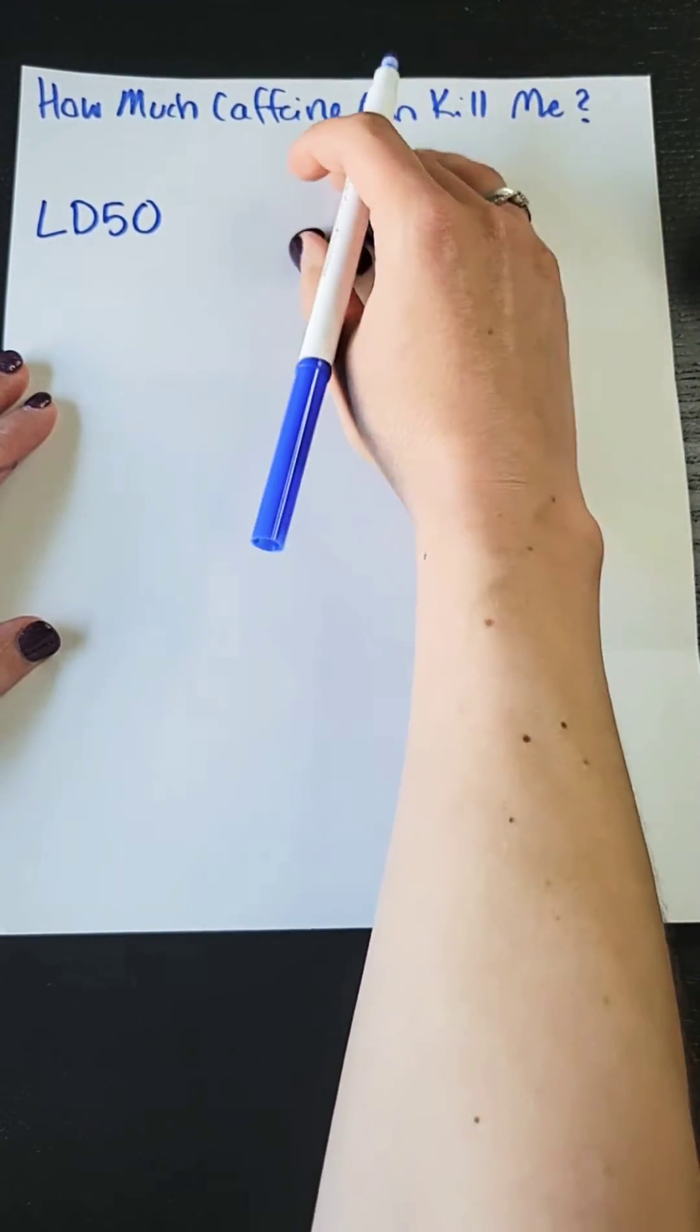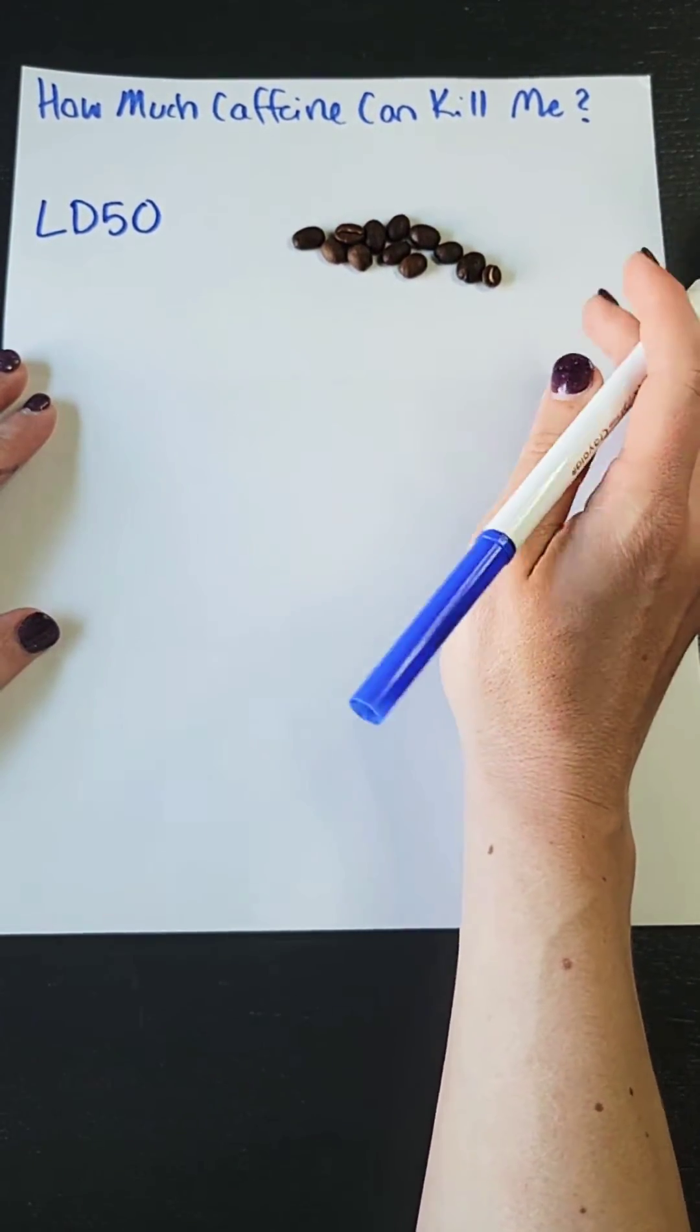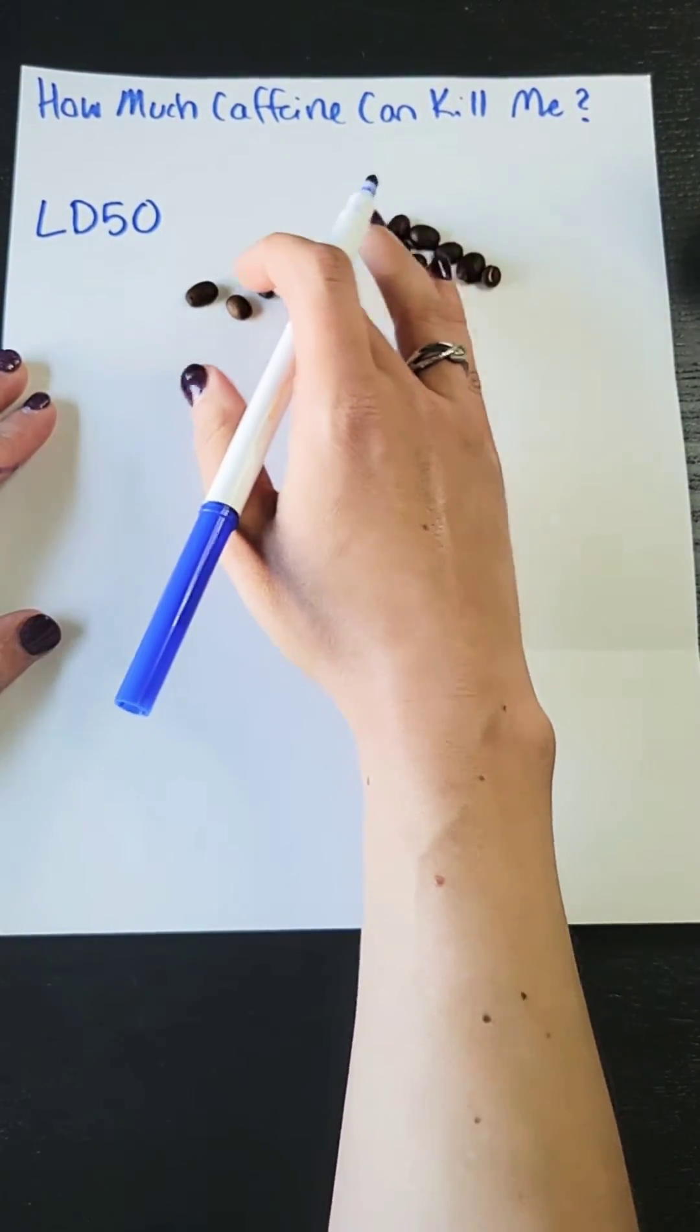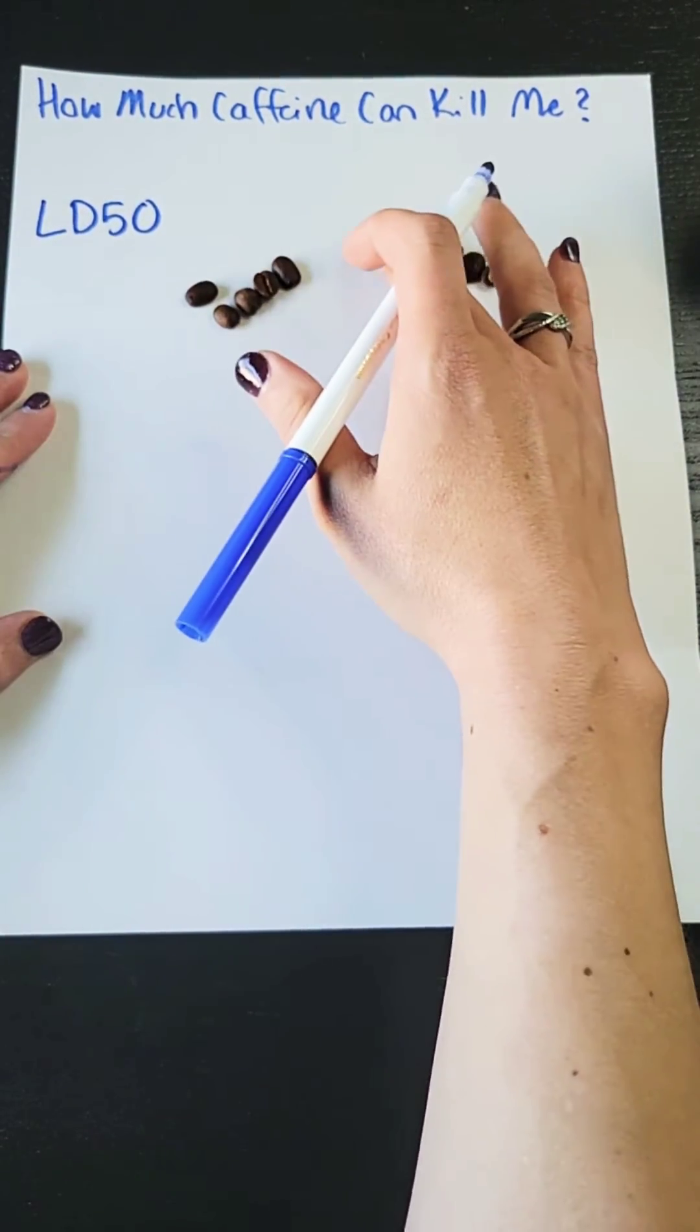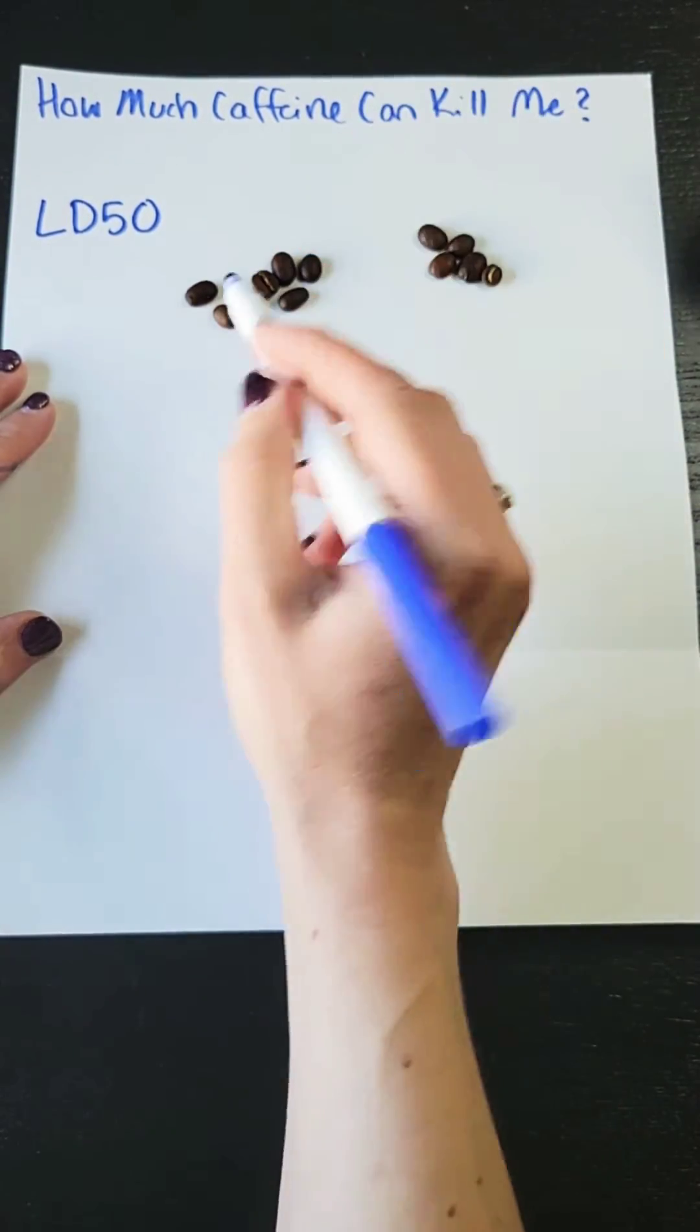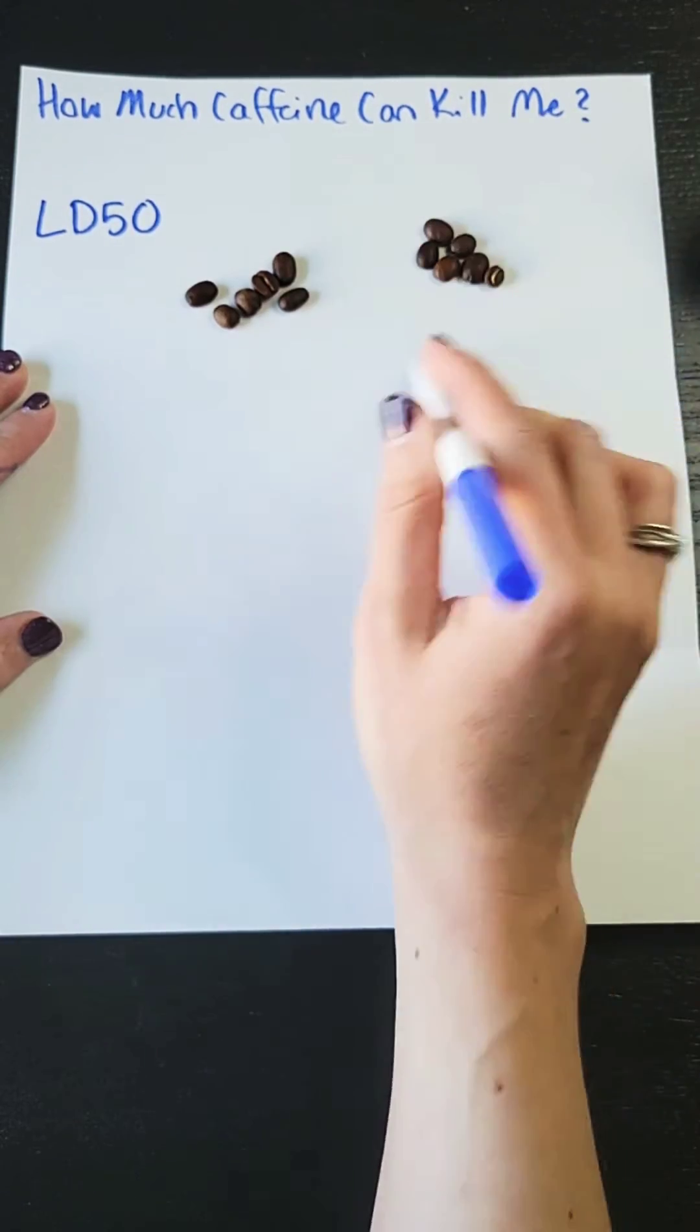Let's say this pile of coffee beans here represents the U.S. population. Well, some people are more sensitive to caffeine and might die with a smaller dose. The LD50 is the dosage it would take to kill about half of the population.